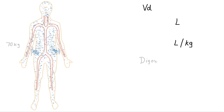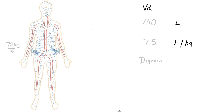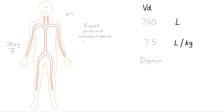Digoxin, for instance, has a VD of 7.5 litres per kilogram. For a 70 kilogram person, that's 70 kilograms times 7.5 to get 525 litres. For a 100 kilogram person, the VD will be 750 litres. So when adjusted for the person we're treating, volume of distribution will help us achieve the exact plasma concentration that we want, to achieve the patient outcome that we want.